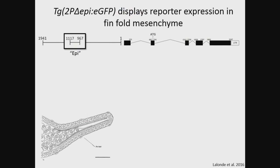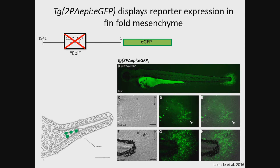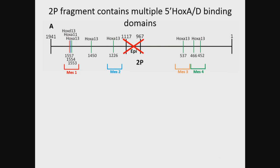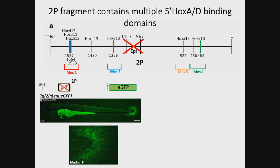To identify our mesenchymal enhancers, we simply removed our epi fragment and created another transgenic line, 2p-delta-epi-eGFP. We determined that both surrounding fragments are required to drive reporter expression in the mesenchyme of the median and pectoral fin, suggesting multiple enhancers exist and are required simultaneously. We again analyzed this fragment using TRANSFAC to identify binding domains, specifically interested in binding domains for 5' HoxAD proteins. We identified five HoxA13 sites, one HoxD13, and one HoxA11, and we tested each of these for enhancer activity. These were called mes1 through mes4, and each was deleted one at a time from our 2p-delta-epi-eGFP construct.